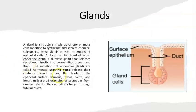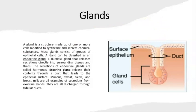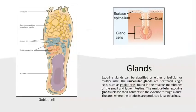Exocrine glands are the ones that are going to produce something — for example, sweat — and they are going to secrete this to the exterior. All exocrine glands are going to have two main parts: an acinus and a duct. The acinus is the area where the substance is produced, and the duct is the tube that takes the contents to the outside, most of the time referring to the skin.